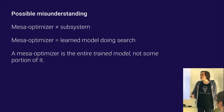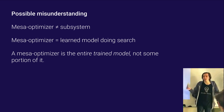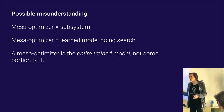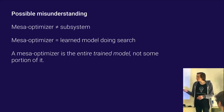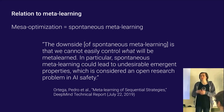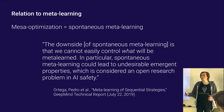When I say mesa-optimizer, I don't mean some subsystem or component of the model. I mean the whole trained model — a neural network that is doing some sort of search through a space of possible plans or strategies for something which does a good job on some criteria. You can think about this as spontaneous meta-learning: you didn't think you were doing optimization over learning processes, but the algorithm your gradient descent found was itself a learning algorithm.